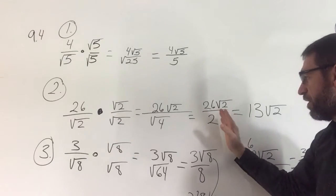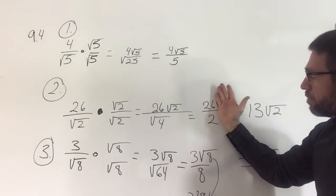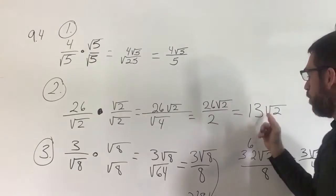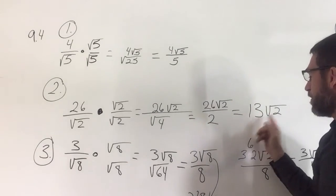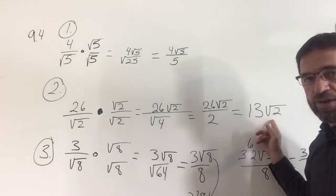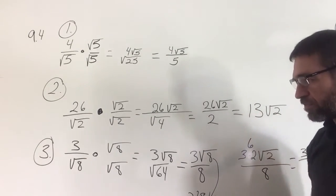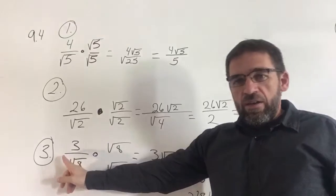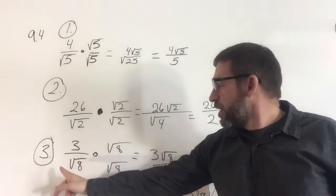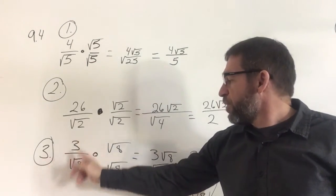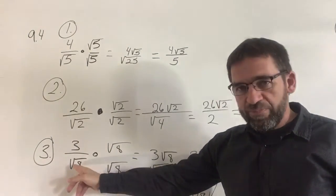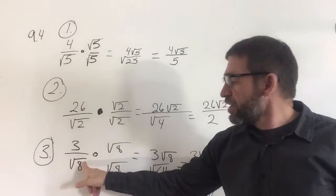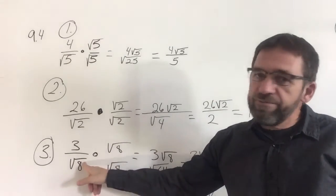Remember, you can't divide into the number inside the radical — only work with the numbers outside. So we brought it down to 13 radical 2. Now number three: we have 3 over 8, and again I want to get the square of 8.